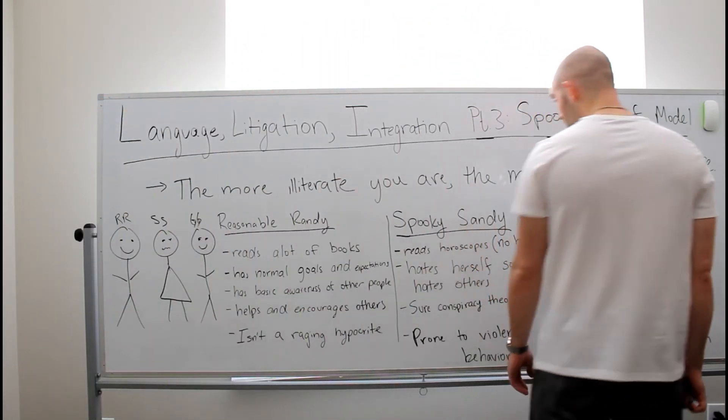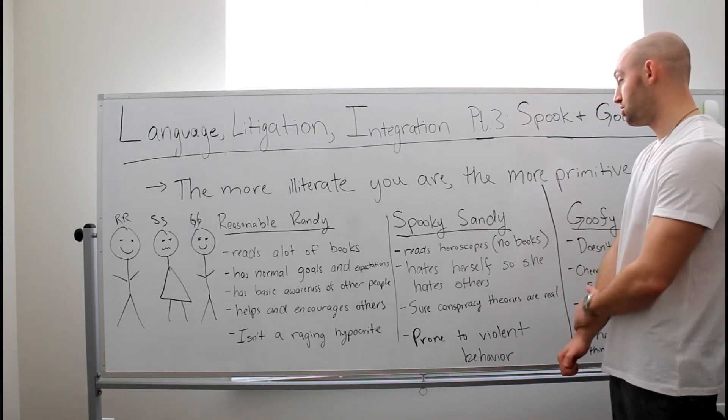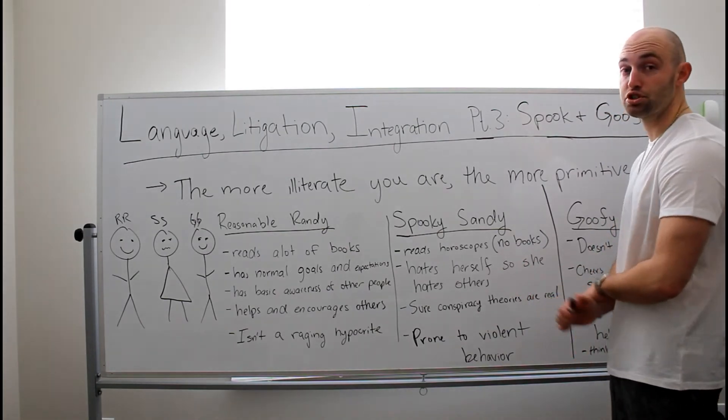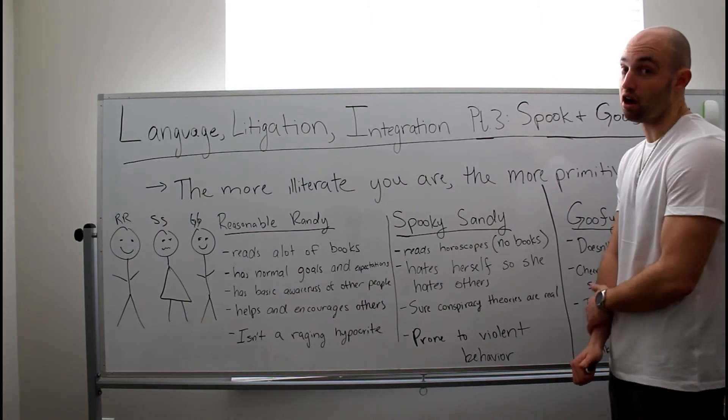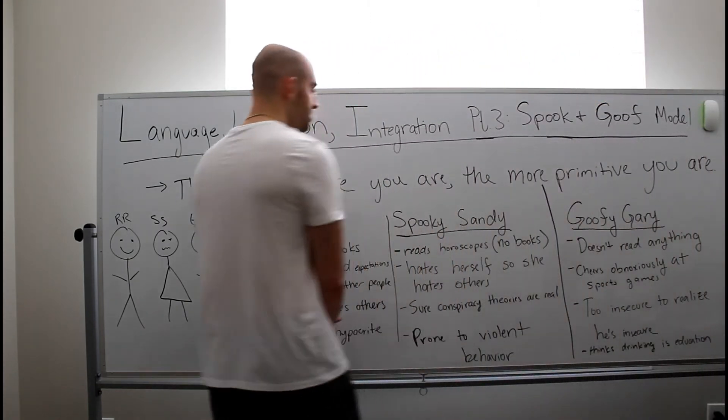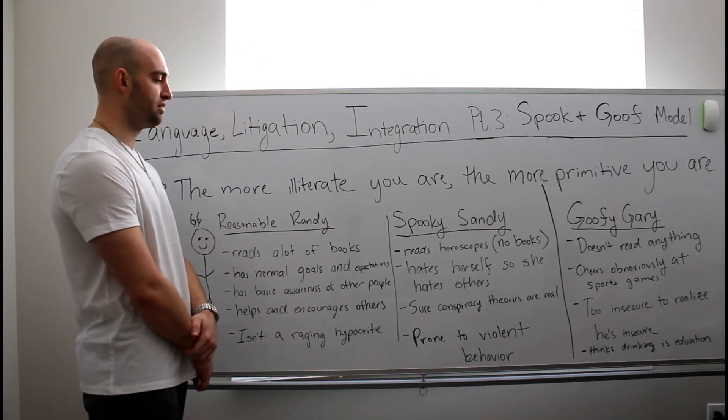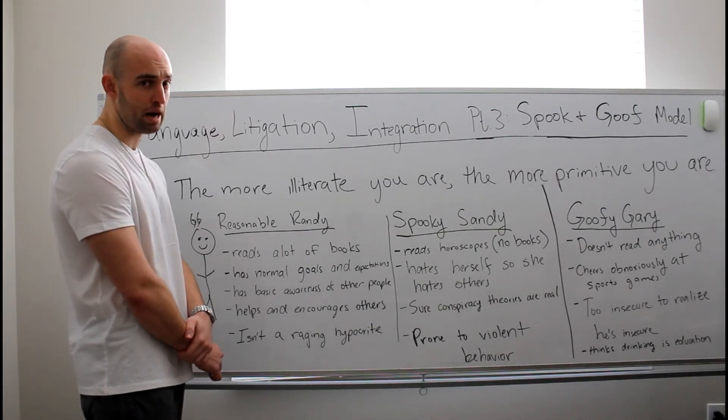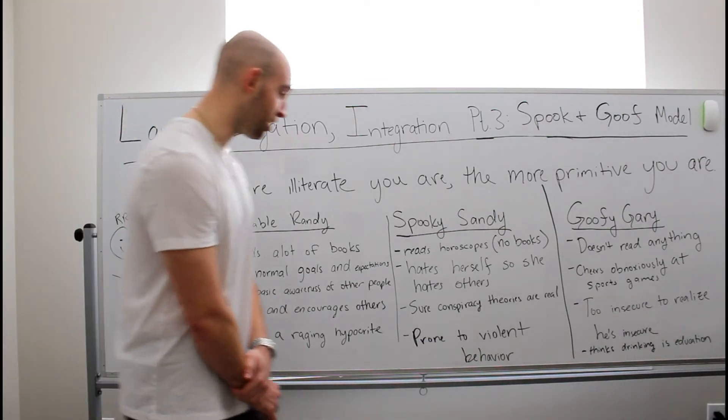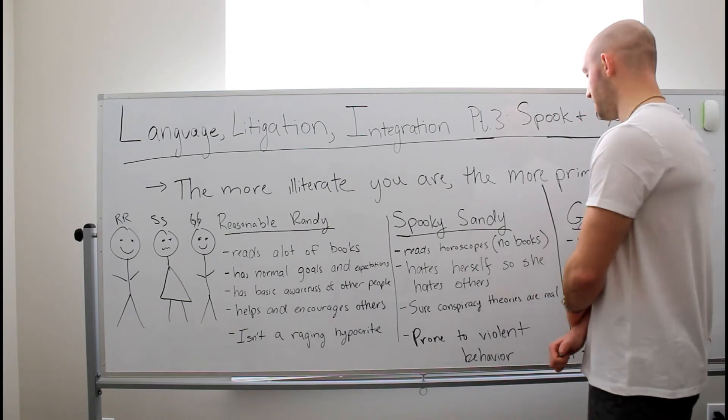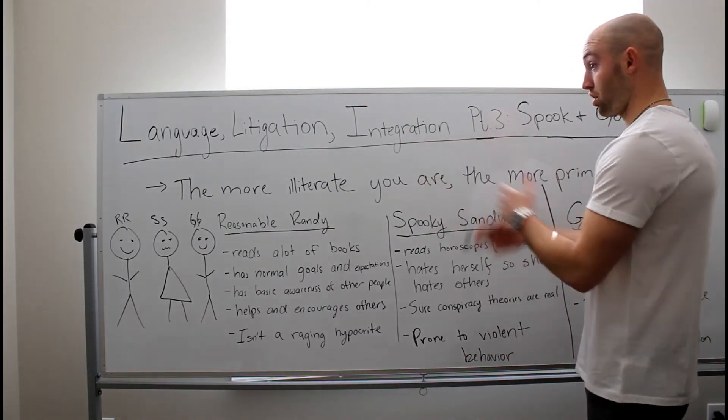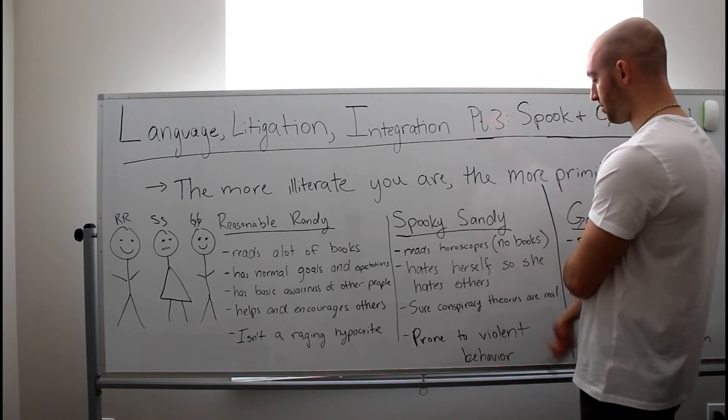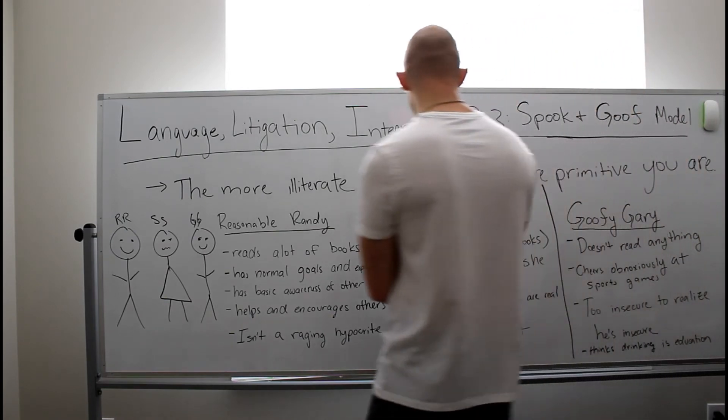Now, we go over to our other character, Spooky Sandy. She reads notebooks. She reads horoscopes. She hates herself, so she hates other people. She's absolutely sure conspiracy theories are real based off what she read on online forums. And let me be clear here. Conspiracy theories, the government has committed some bullshit and there is pockets of influence. But the real detriment to society is profound illiteracy. The populace is responsible for the government, not the other way around. And Spooky Sandy is prone to violent behavior. Just like on our last slide we said, every living organism has to, the first thing they do is they have to not die. So when you don't read books and you don't have awareness of other people, Spooky Sandy is going to lash out violently. Maybe she'll join the police force. We'll find out here shortly.